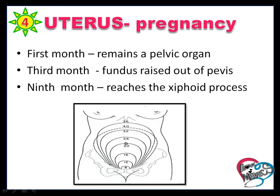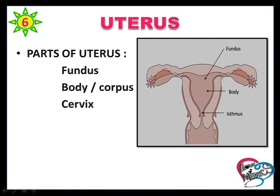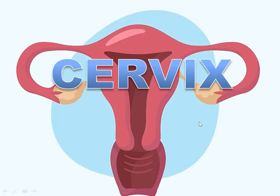At the first month, the uterus remains as a pelvic organ. At the third month, the fundus is raised out of the pelvis. At the ninth month, it reaches the xiphoid process. The uterine cavity is triangular shaped, and the cervical canal is also present. It connects the cavity of the body through the internal os and with the vagina through the external os. Parts of the uterus are the fundus, body, and cervix.